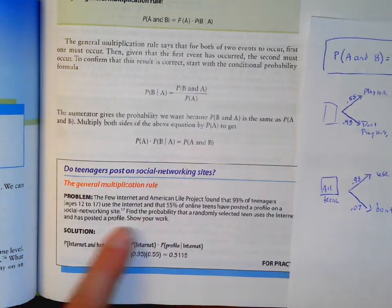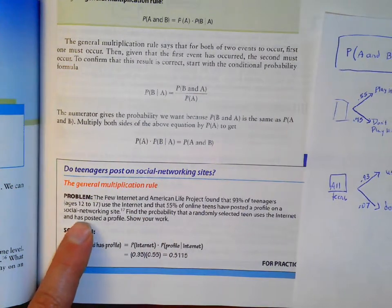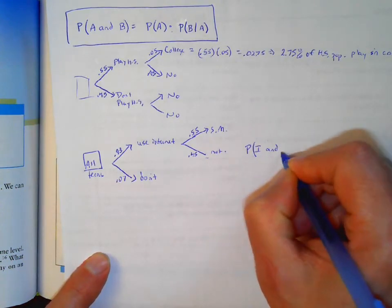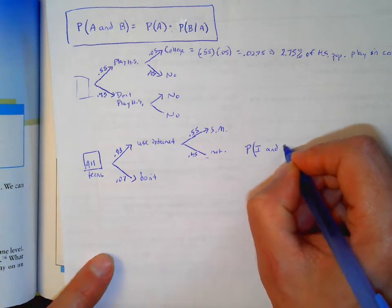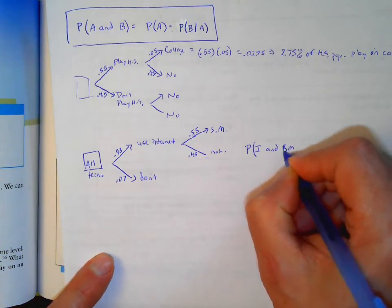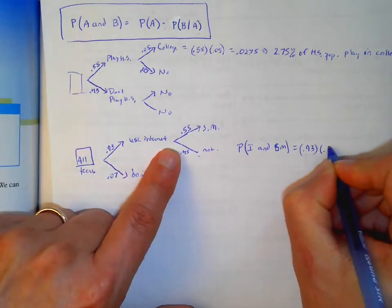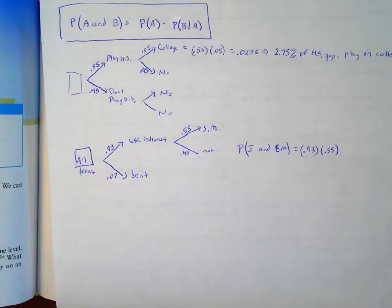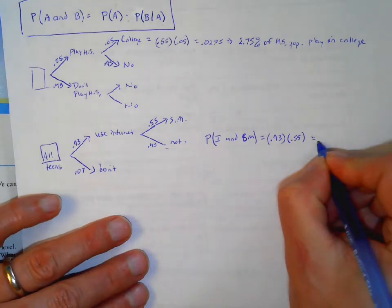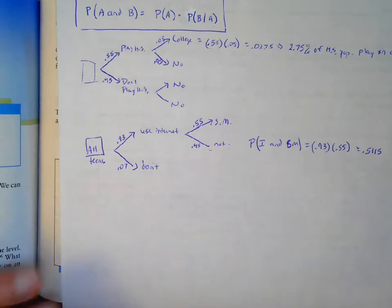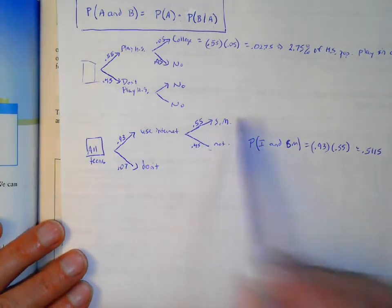We want to find the probability that a randomly selected student uses the Internet and has a profile. We take 0.93 and multiply it by 0.55, which gives us 0.5115. That's the probability that if I just select somebody randomly, they will be on the Internet and have a social media profile.